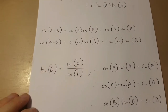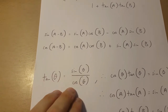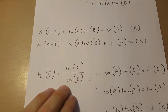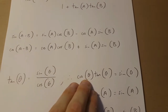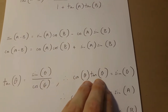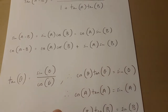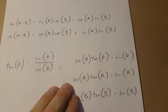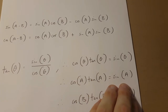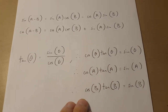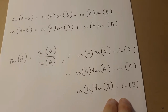Thirdly, tan theta equals sin theta over cos theta. This means that cos theta times tan theta is sin theta, which also means that cos A tan A is sin A, and cos B tan B is sin B.